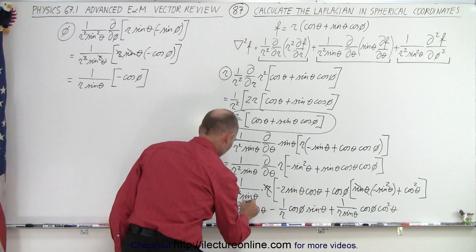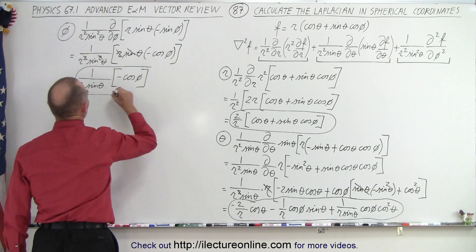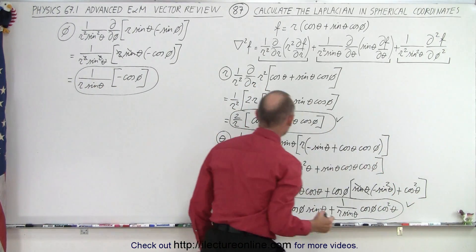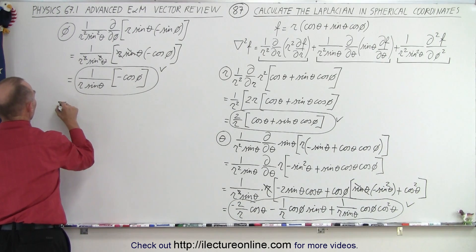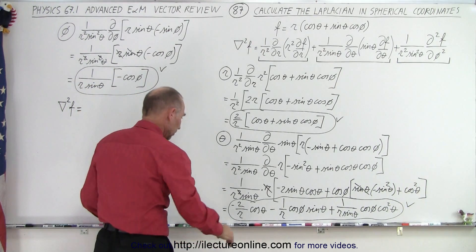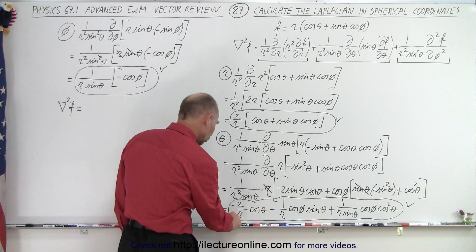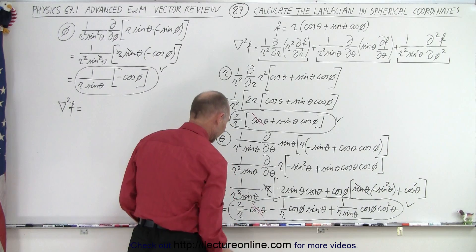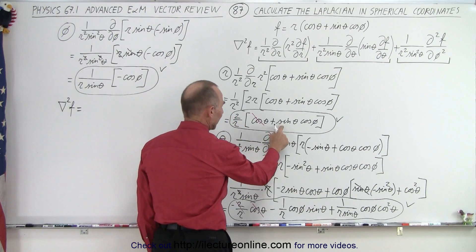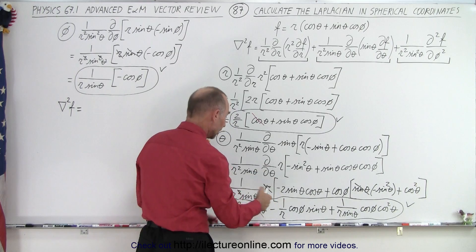Now we circle all three results and add them together. The Laplacian is the sum of all three parts. Let's be smart about combining and cancel what we can. From part one we have 2 over r cosine of theta, and from part two we have minus 2 over r cosine of theta — those cancel out. Then we have 2 over r times sine theta cosine phi from part one, and minus 1 over r cosine phi sine theta from part two, giving a net of 1 over r times sine theta cosine phi.